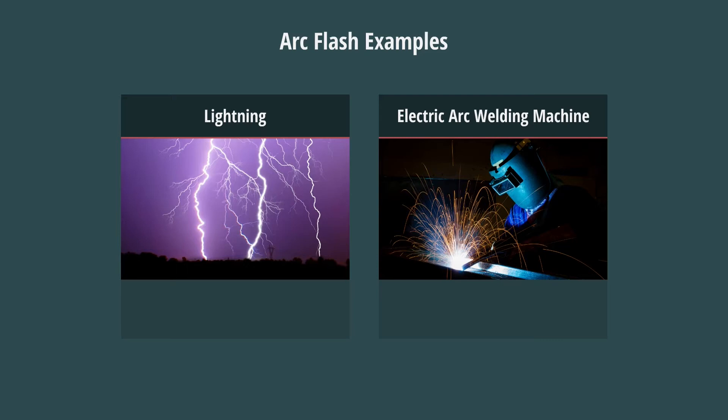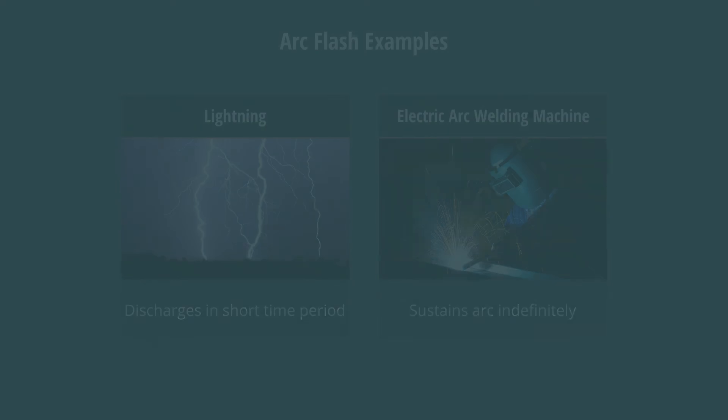The difference between these two examples is that lightning discharges itself in a very short time period, whereas an arc welding machine sustains the arc indefinitely. Either way, you do not want to get near either of them.